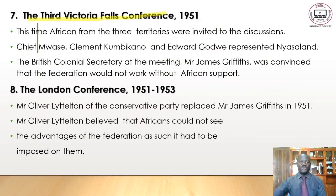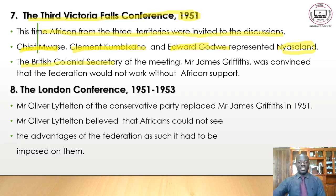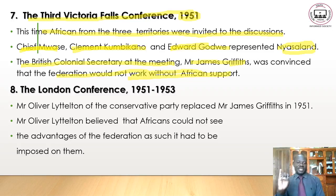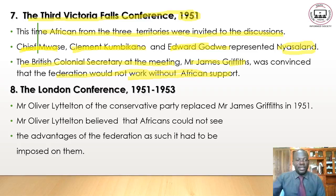Then there was the Third Victoria Falls Conference of 1951. This time Africans from the three countries were invited for discussions. Chief Mwase, Clement Kumbikanu, and Edward Gondwe represented Nyasaland. The British Colonial Secretary at the meeting, Mr. James Griffiths, was convinced that the federation would not work out without African support — the whites were convinced that African support was necessary.